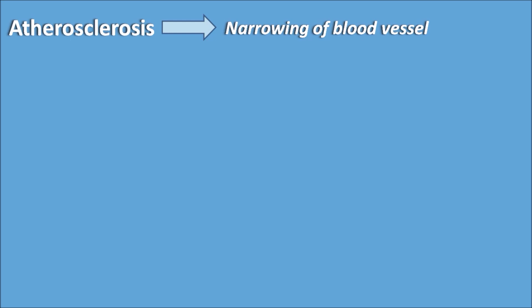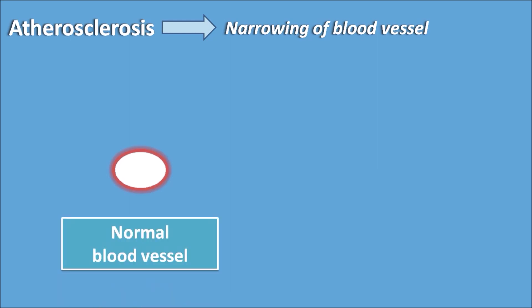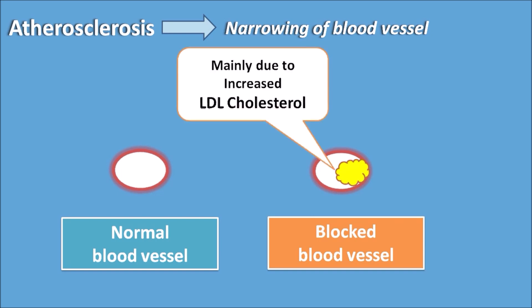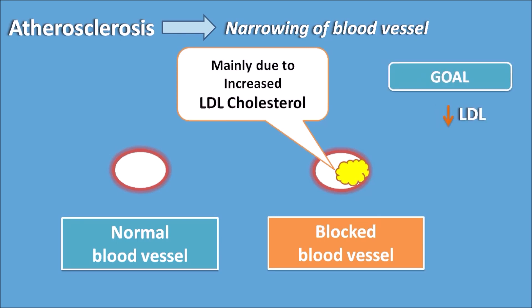In a normal blood vessel, blockage can occur through formation of a plaque called atheroma. This blocked blood vessel is rich in LDL cholesterol. The main goal in the treatment of atherosclerosis is to decrease LDL and increase HDL, which is why LDL is called bad cholesterol and HDL is called good cholesterol.